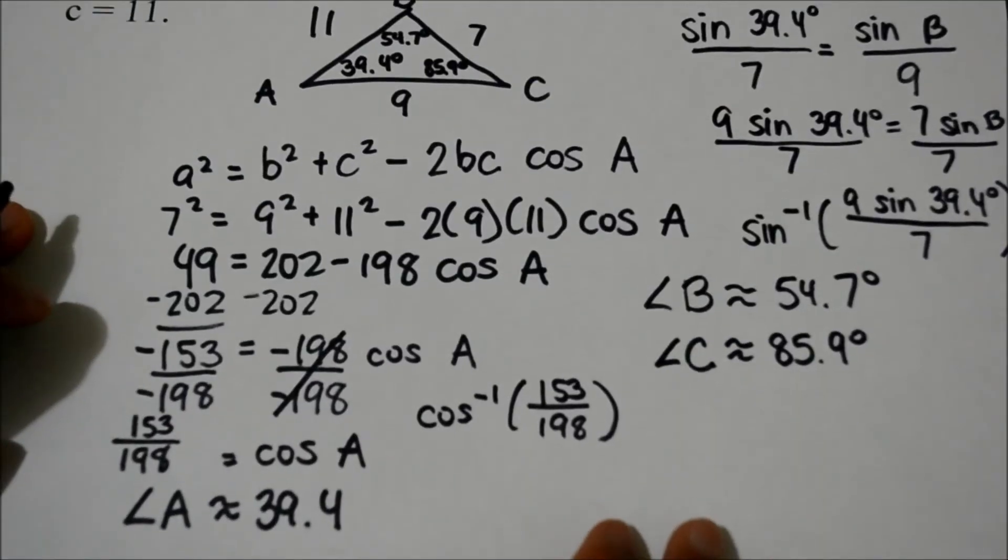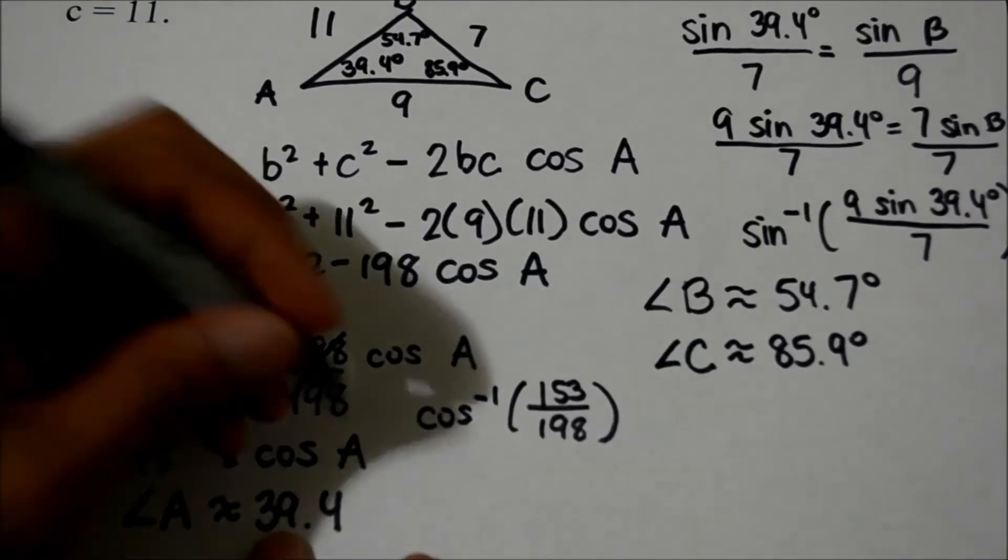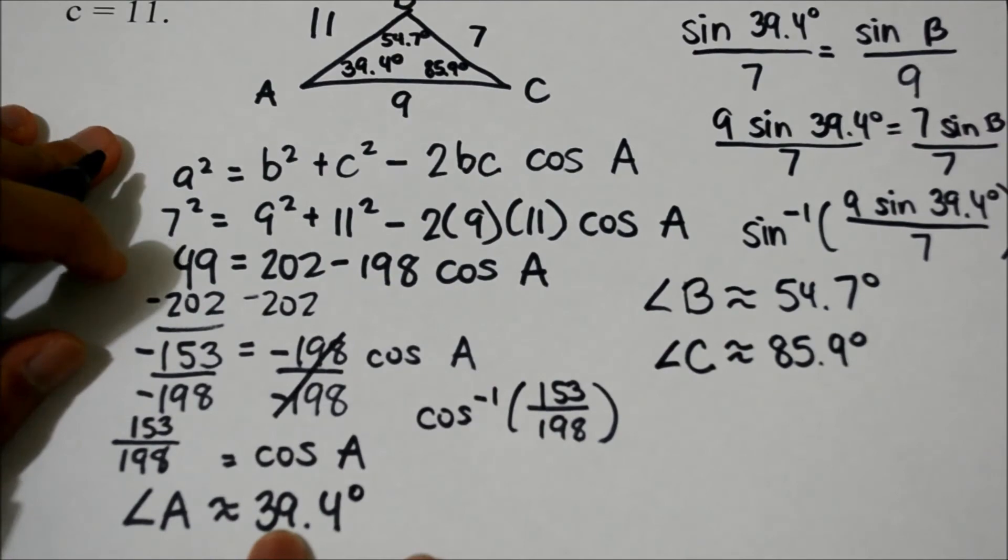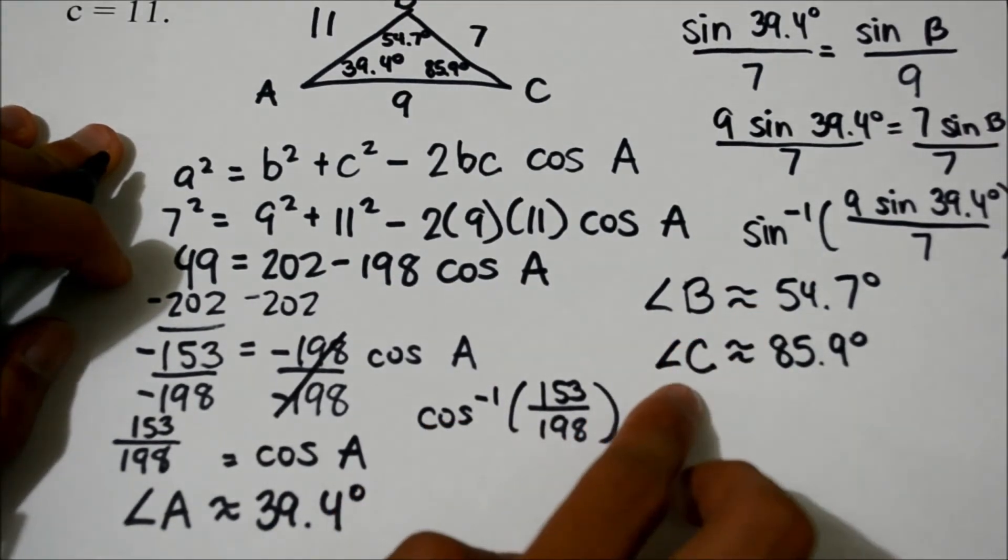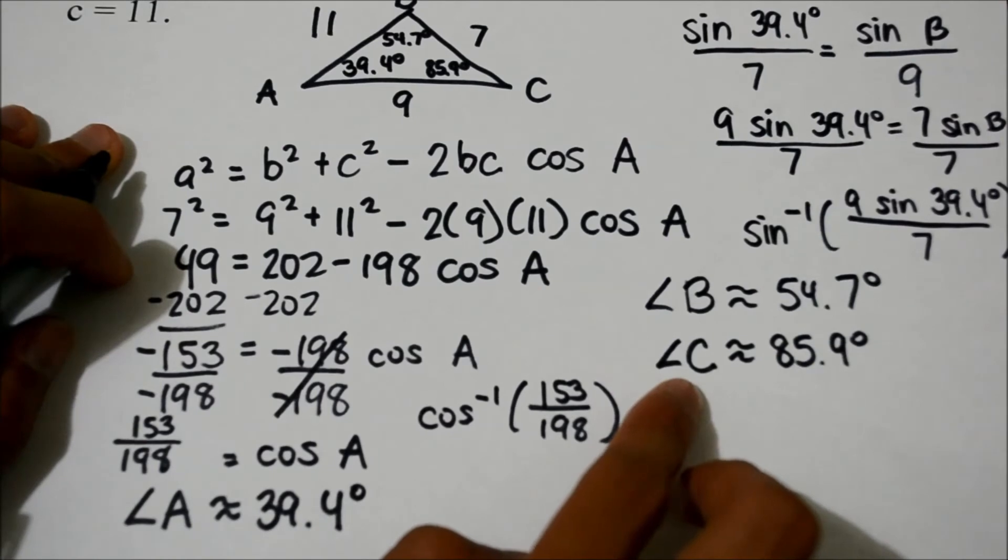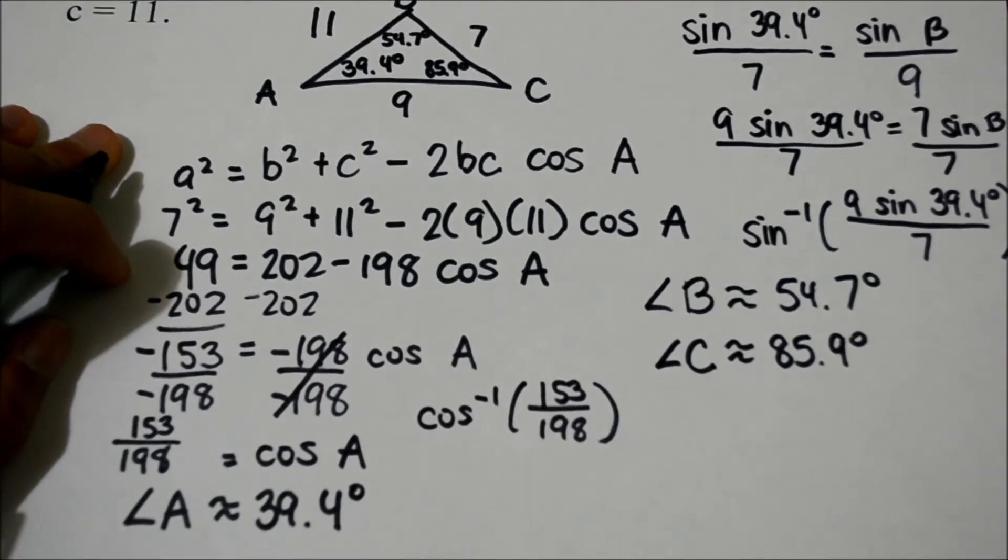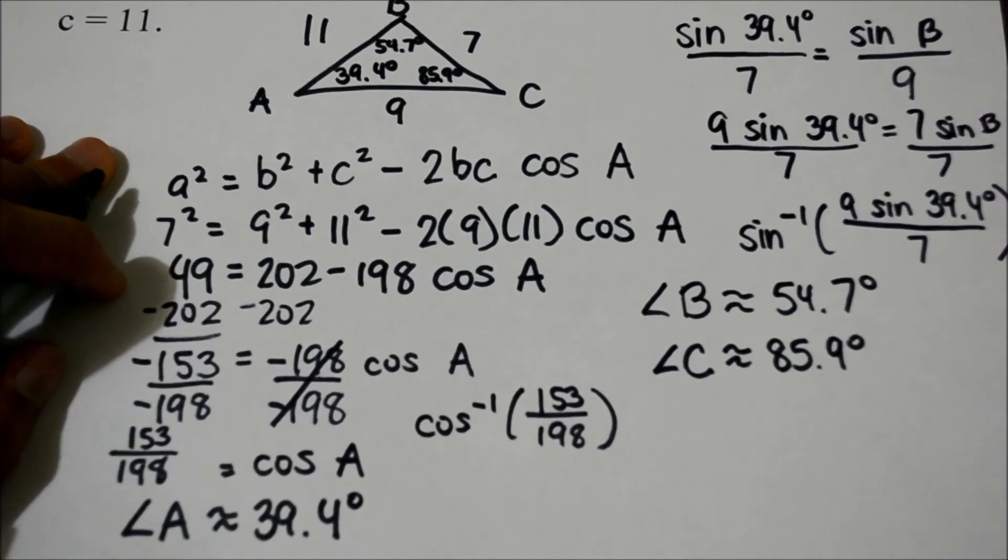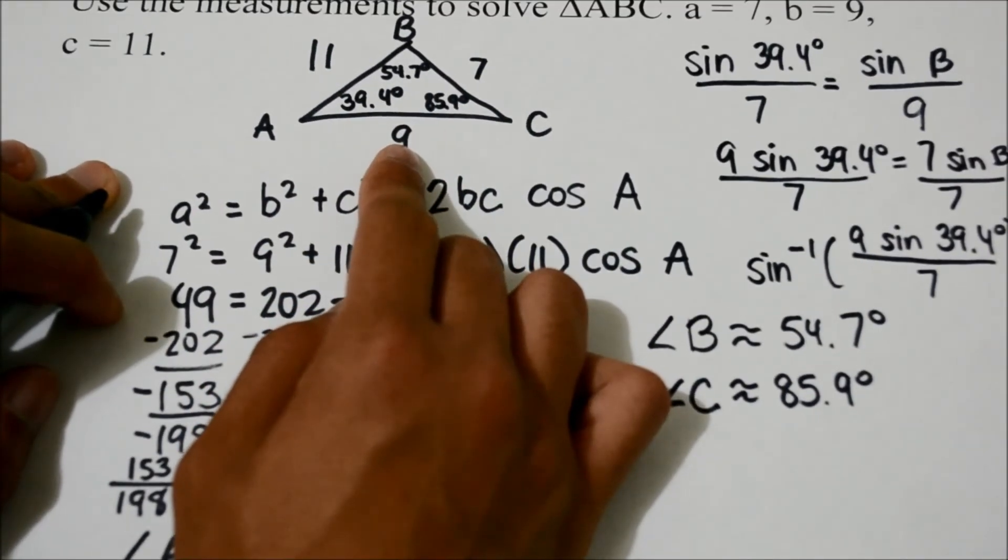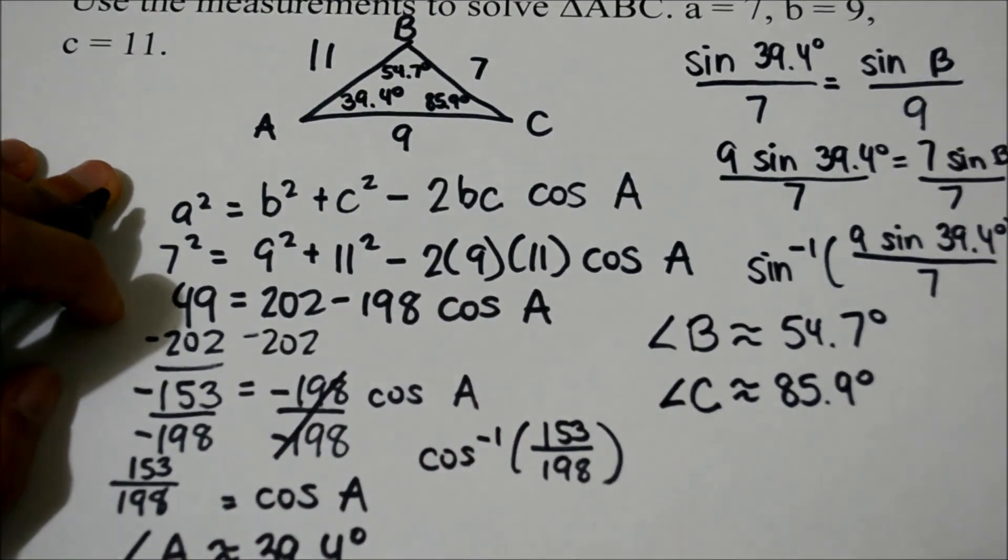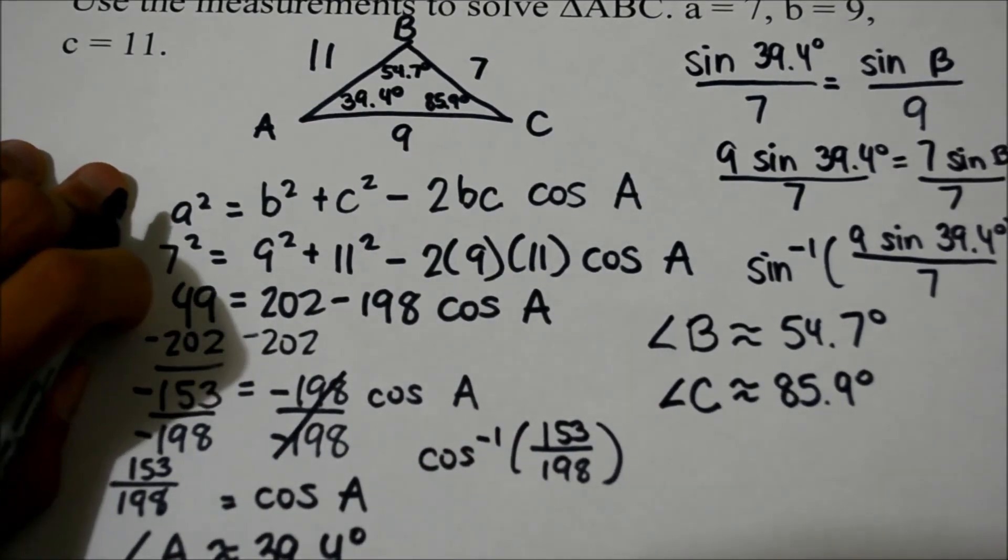So the three angles are angle A which is 39.4 degrees, angle B which is 54.7 degrees, and lastly angle C which is 85.9 degrees. They all equal to 180 degrees and they match with the given side lengths if you were to use the law of cosines formula. Now we have found the angles from all corners of this triangle and we have completely solved this triangle.